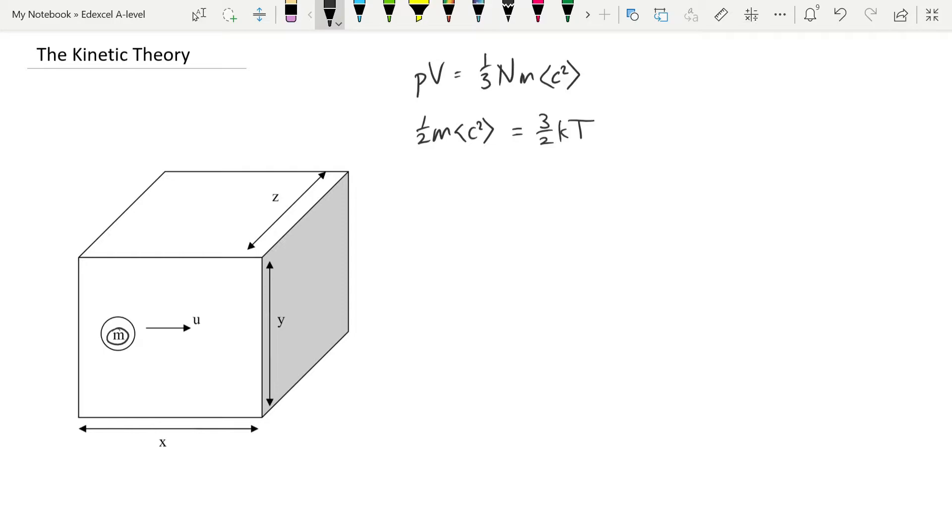So we can say that as the particle moves to the right and collides with the shaded face, it has a momentum of plus mu. And we say plus because it's going to the right, and that's the convention. When it bounces off the shaded face and comes back, it still has the same velocity, so we still have a velocity of u, it still has the same mass, but this time our momentum is going to be in the opposite direction, so our momentum after is going to be minus mu. Therefore we can say that the change in momentum is the momentum after minus mu minus the momentum before, which is minus mu, and so we end up with minus 2mu.